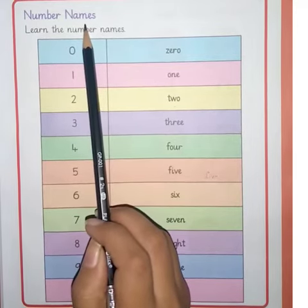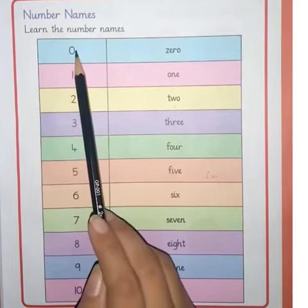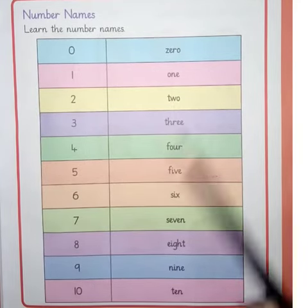What we are going to do is we are going to learn the number names. This is your counting from 0 to 10 and these are the names.